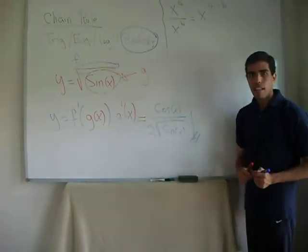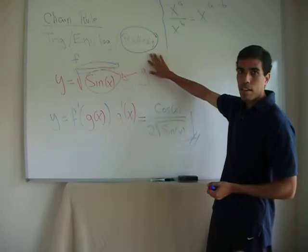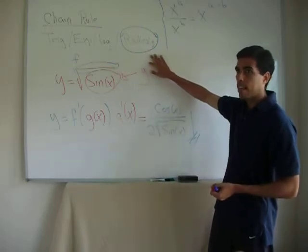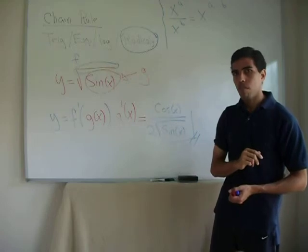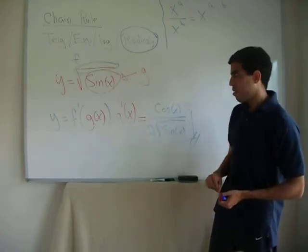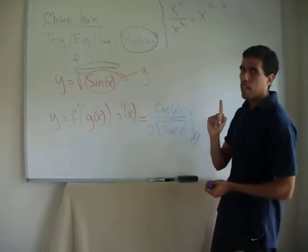Keep in mind the following. When you have a radical, there is a very big chance that you're going to have a chain rule derivative involved. Let's do another example in another video.